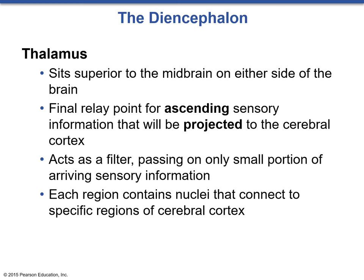The thalamus is going to be a central egg-shaped body that surrounds the third ventricle. It is an important switching and relay station for sensory and motor signals, and it also acts as a filter to limit which sensory signals proceed to the primary sensory cortex in the cerebrum. It contains a complex arrangement of thalamic nuclei, including the lateral and medial geniculate nucleus.